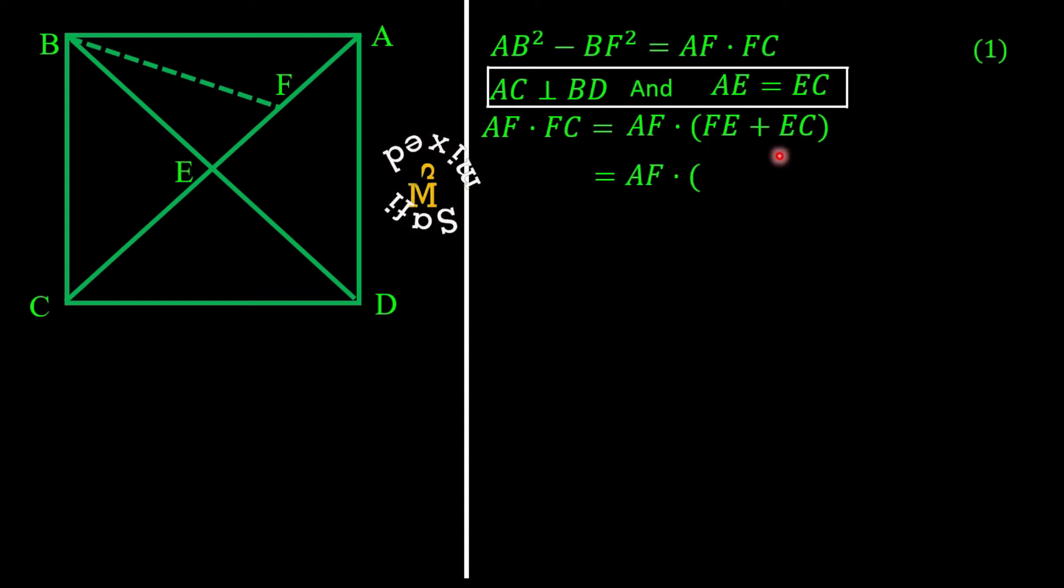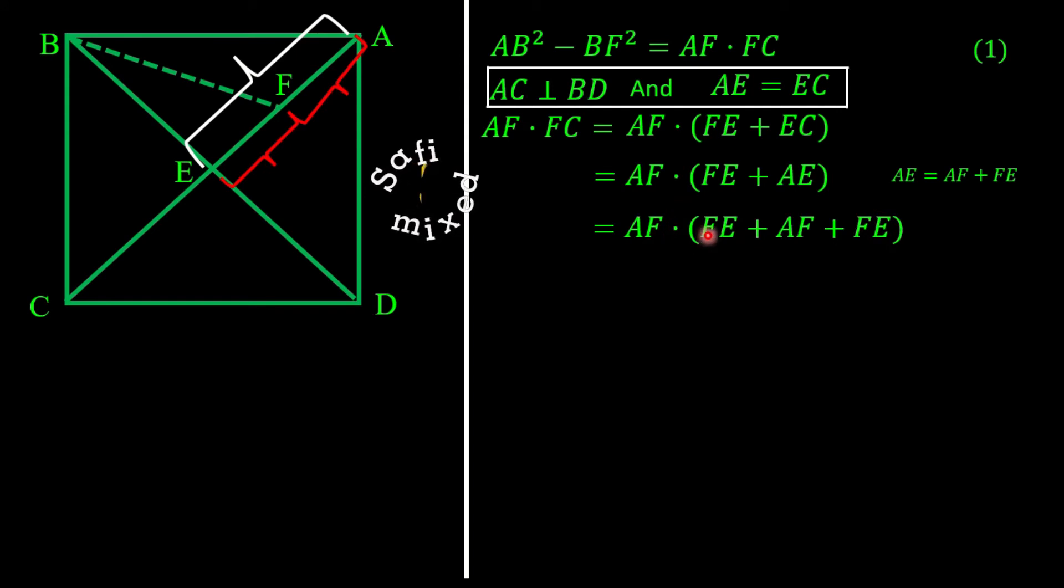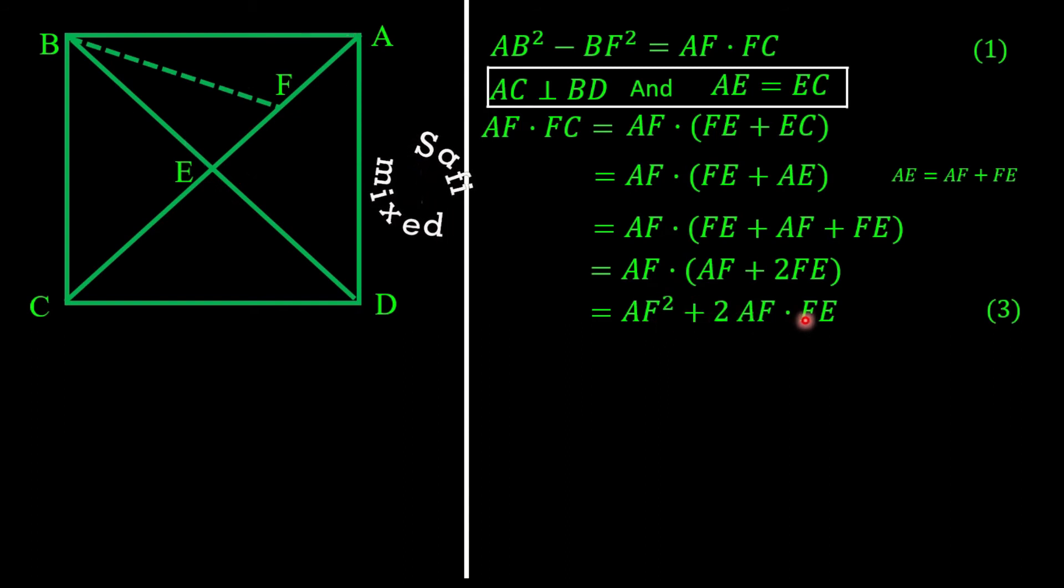And using the condition AE = EC, I can put the right side of this equation into the form AF·(FE + AE) where I'm writing EC = AE. And again from the geometry of the figure we see that AE = AF + FE. That is, we can substitute AE = AF + FE at this position. And the right side of this equation takes the form AF·(FE + AF + FE). Combining FE with FE I can further modify the result into the form AF·(AF + 2FE), and removing the brackets I can further modify this into the form AF² + 2·AF·FE. And I denote this with equation 3.